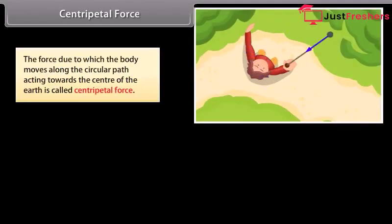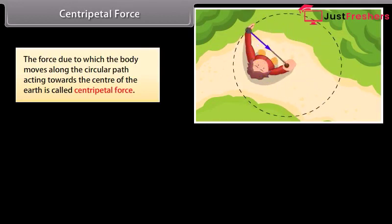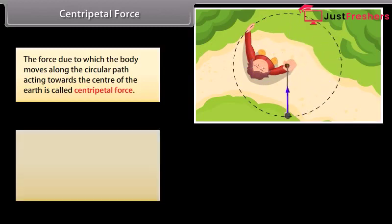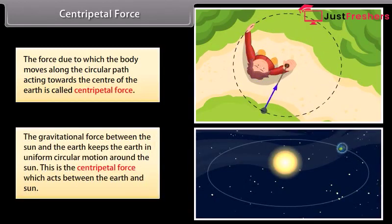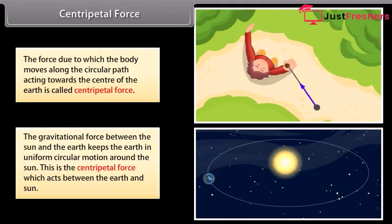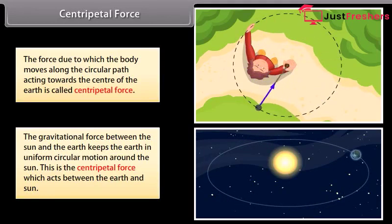Centripetal force: The force due to which a body moves along a circular path, acting towards the centre, is called centripetal force. The gravitational force between the sun and the earth keeps the earth in uniform circular motion around the sun. This is the centripetal force which acts between the earth and the sun.